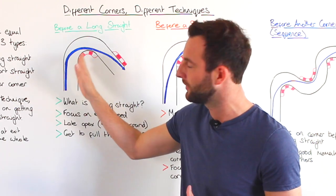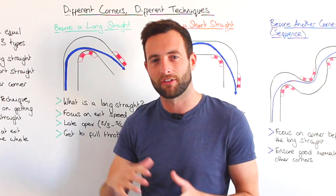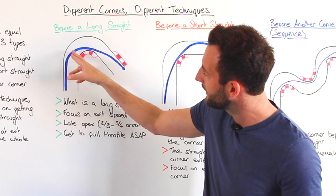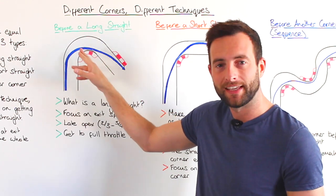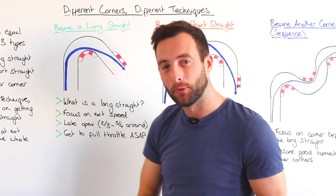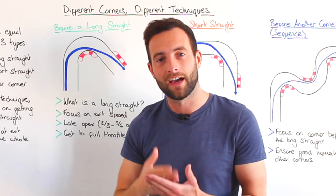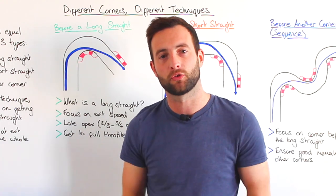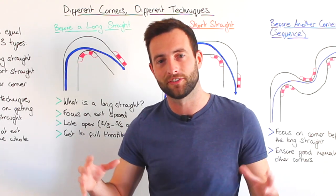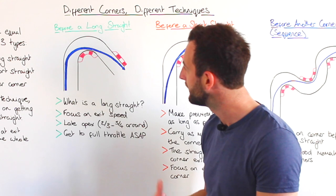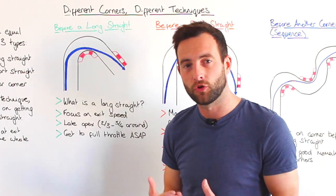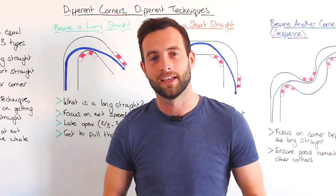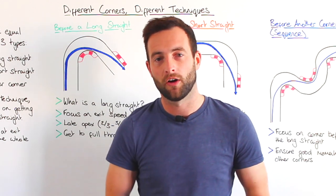We will enter the corner, as you can see on this diagram, a little bit wider than we usually would so that we can take a wider line on the way in, make a bit of a later apex, and importantly get on the accelerator once and as early as possible. This propels us out of the corner much quicker and means we carry that advantage all the way down the next straight. Turning in a little bit later also means you can brake that tiny bit later, saving a little bit of time on the brakes as well.